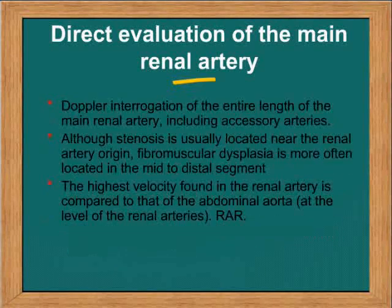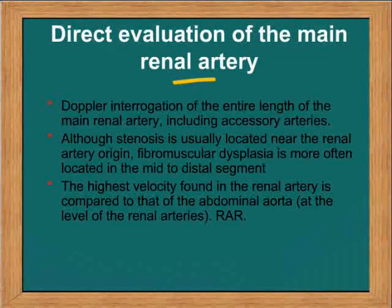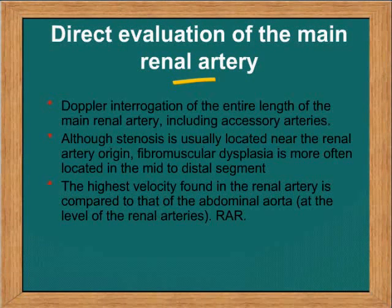Once we perform a Doppler, the entire length of the main renal artery should be assessed. Although stenosis is normally seen in the proximal third, in fibromuscular dysplasia it can involve the middle and distal third. Once we find the highest velocity, this velocity and the aortic velocity should be measured and the ratio taken.